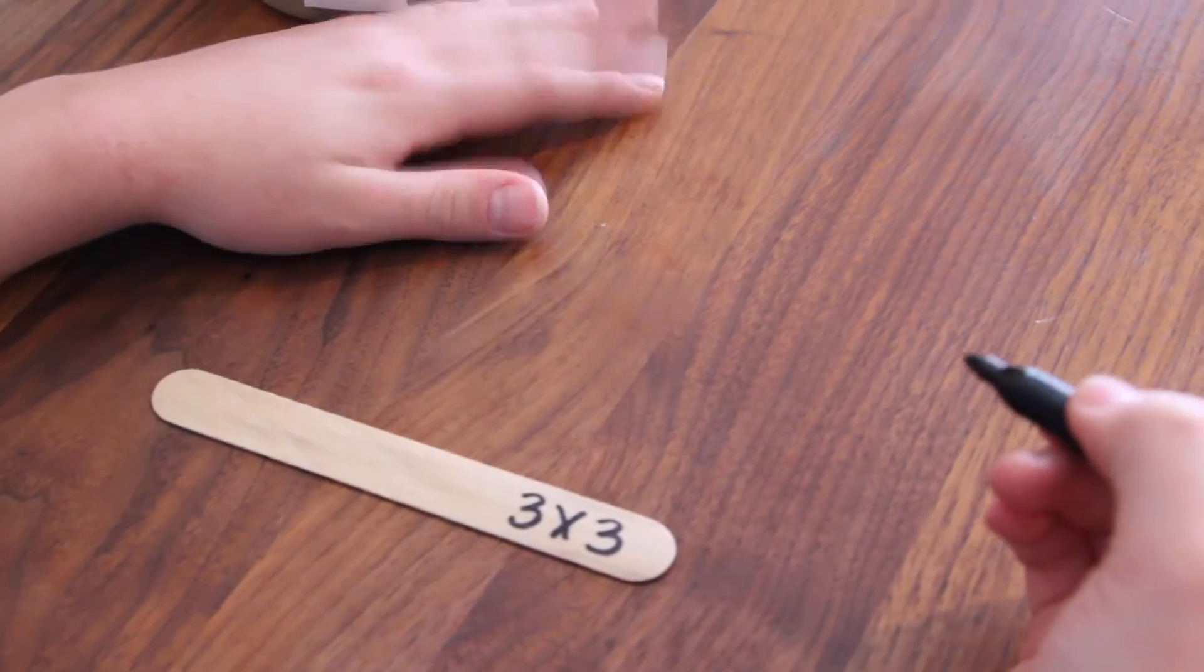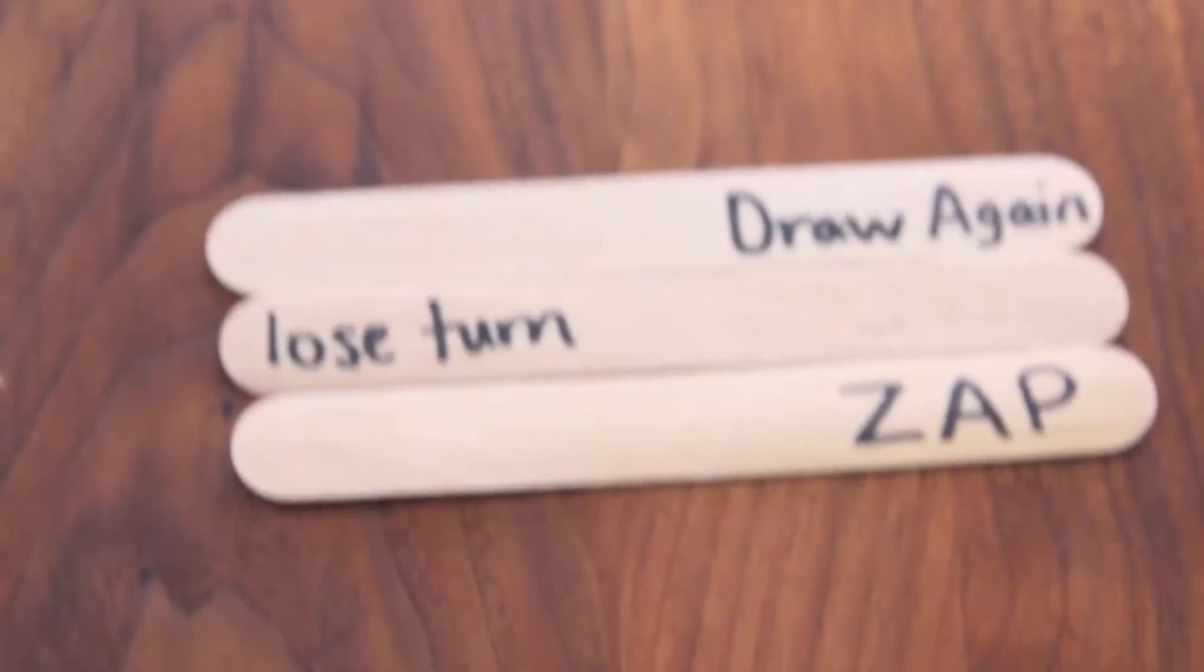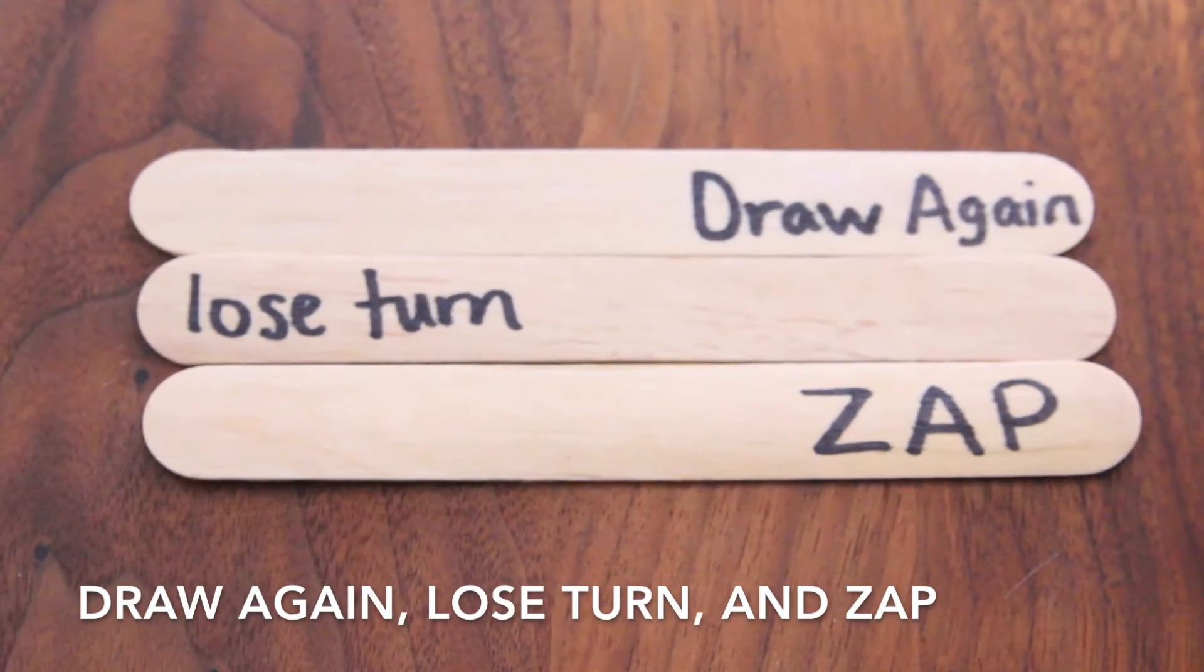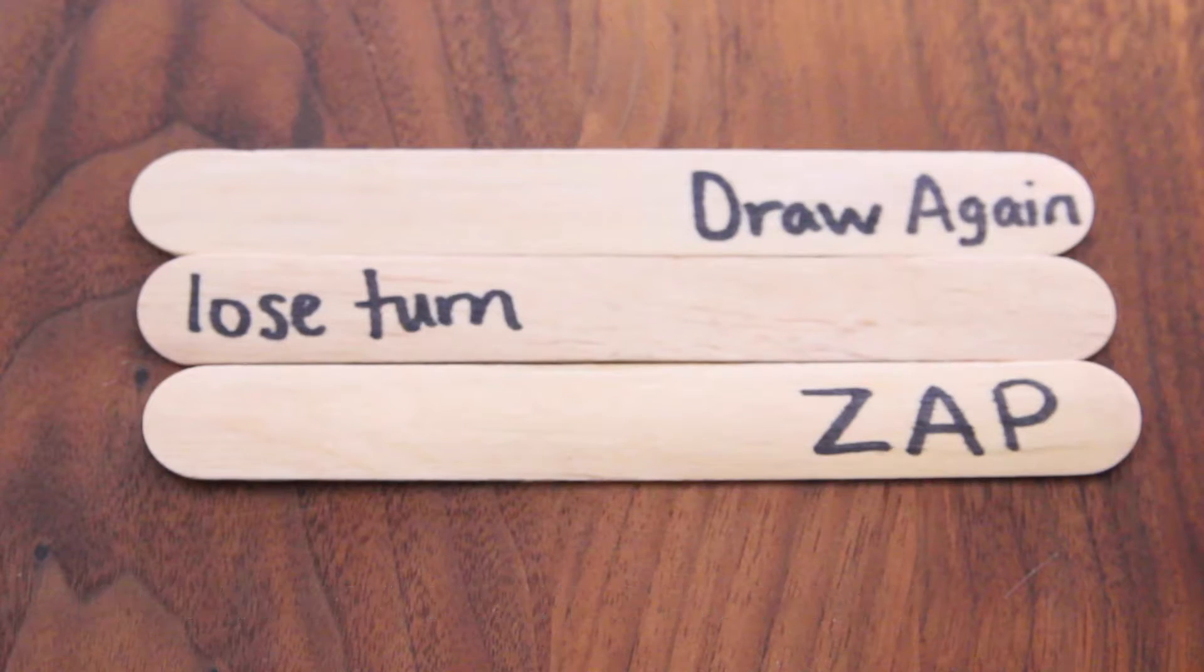With a marker, write a times tables problem on the end of each stick. For every 10 sticks, take three more sticks and write draw again, lose a turn, and zap.